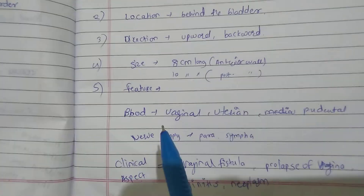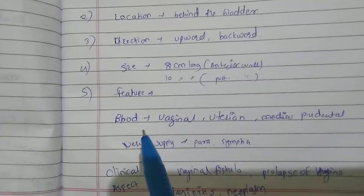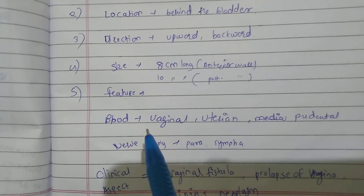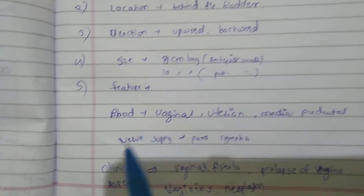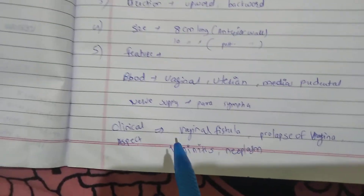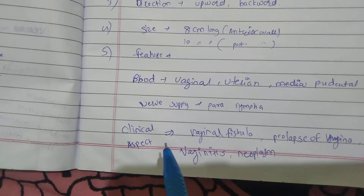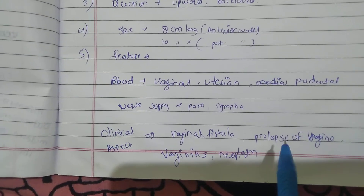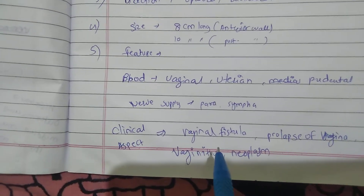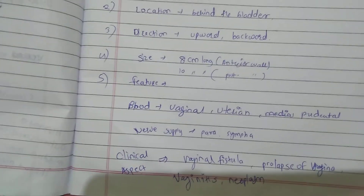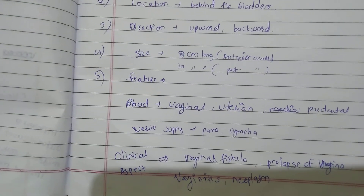Blood supply of the vagina: vaginal artery, uterine artery, and pudendal artery. Nerve supply: parasympathetic and sympathetic. Clinical aspects include vaginal fistula, prolapse of the vagina, vaginitis, and neoplasm.